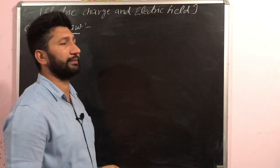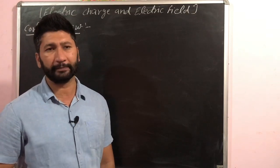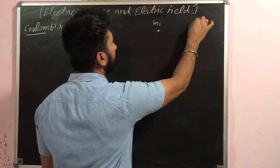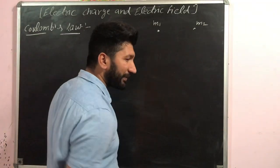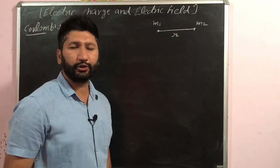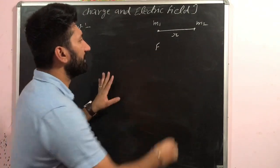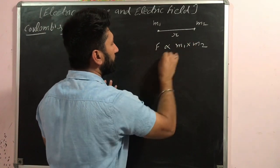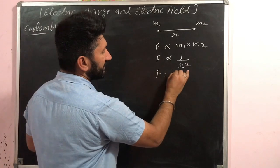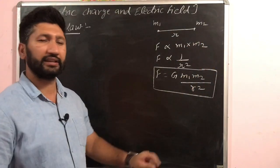Just as we have a law for mass — Newton's Universal Law of Gravitation — which states that the force between two masses M1 and M2 separated by distance R is directly proportional to the product of their masses and inversely proportional to the square of distance: F = G·M1·M2 / R², where G is the universal gravitational constant.